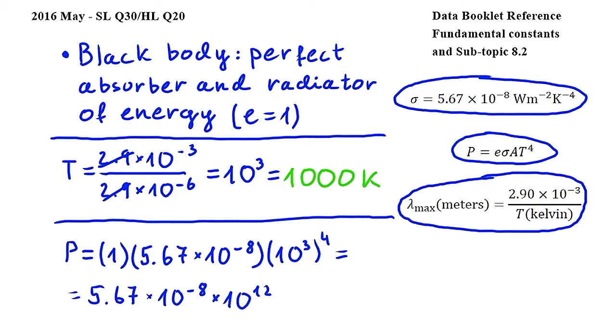10 to the power of negative 8, times 10 to the power of 12, is 10 to the power of 4, because we have to add the powers, so we get approximately 5.7 times 10 to the power of 4 Joules.